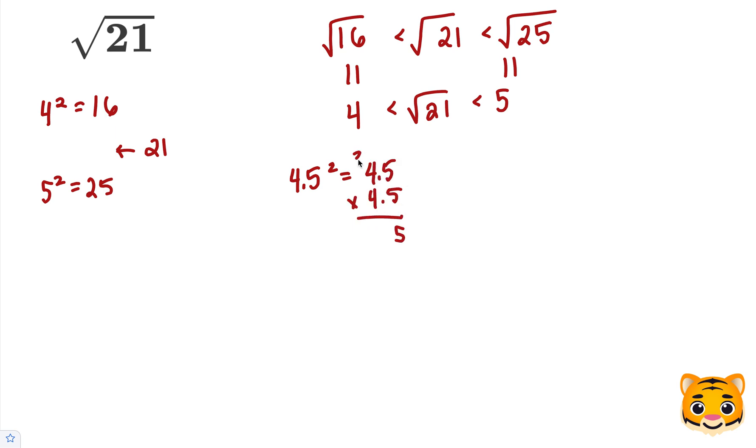5 times 5 is 25, carry the 2. 4 times 5 is 20, plus 2 is 22, add our 0. 4 times 5 is 20, add our 0 and our 2. And then 4 times 4 is 16, plus 2 is 18. When we add these values together, we get 20.25.